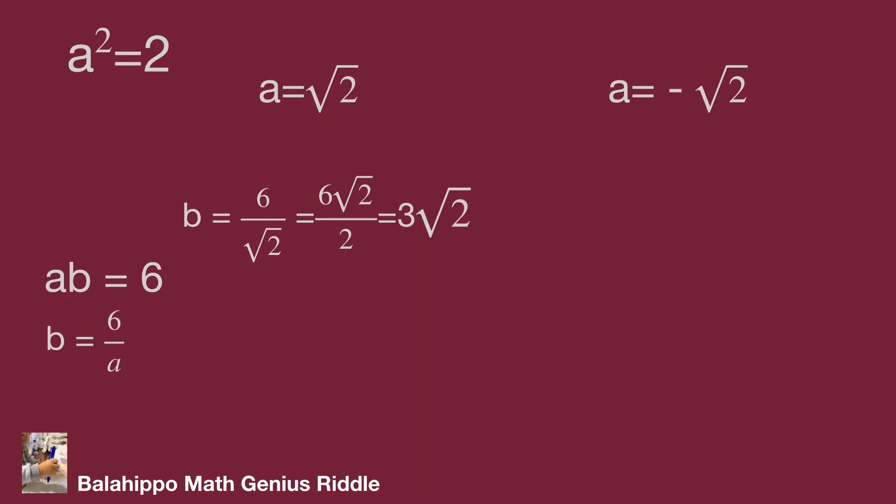Substitute a by -√2: then we get b = -3√2.